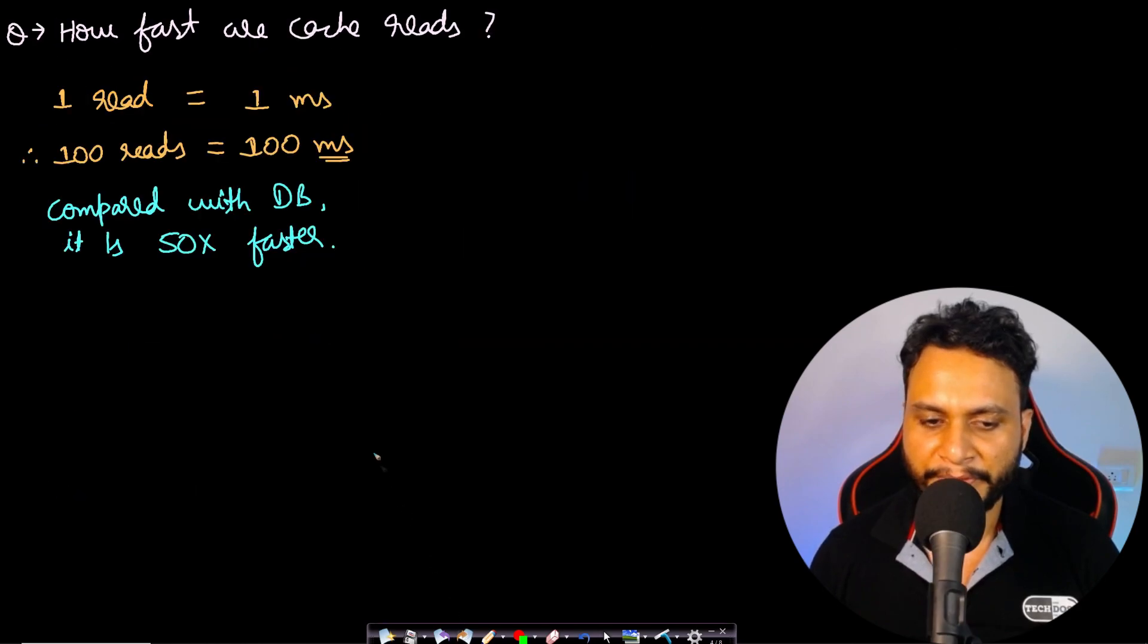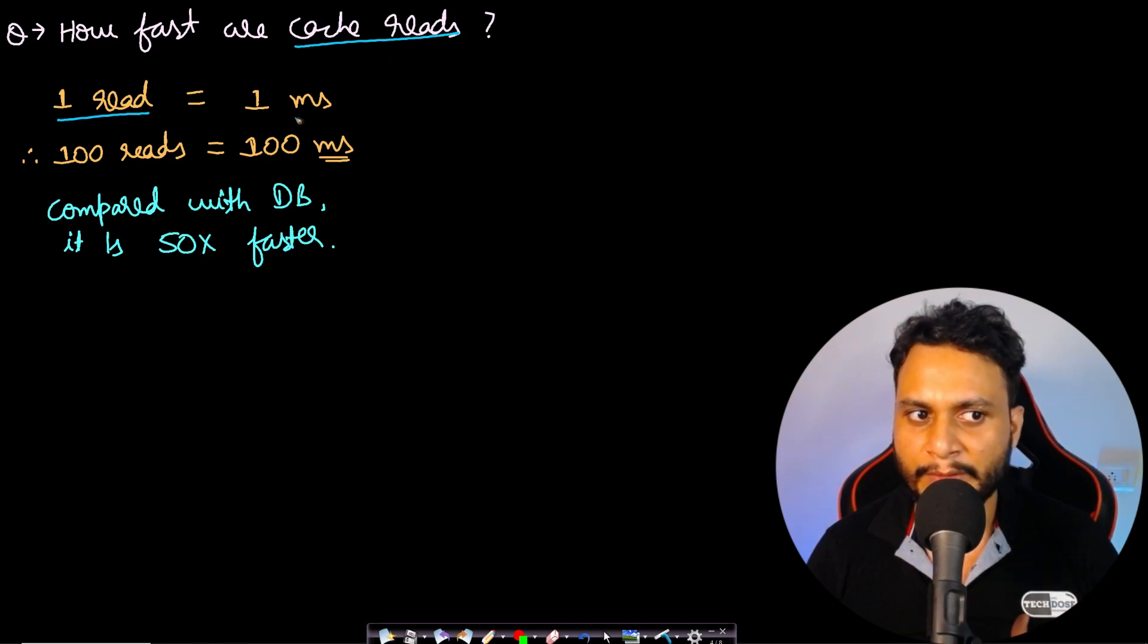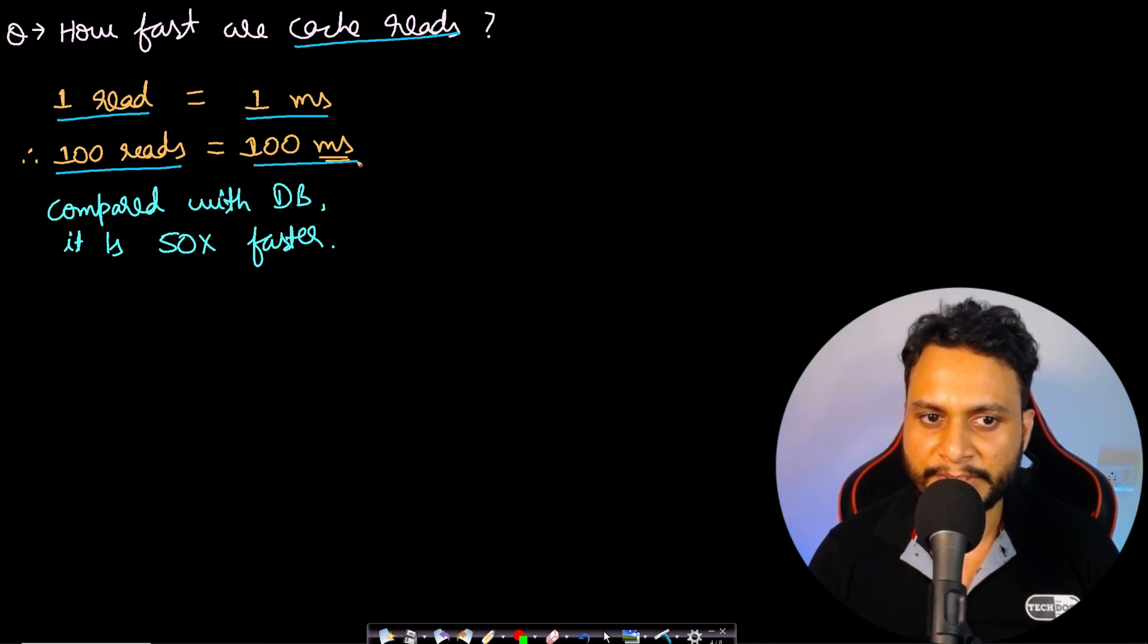Now, since we know about the cache, how fast are the cache reads? You can see that one read is 1 ms, and this is kind of worst case which I am taking. Therefore, for making 100 reads it will be just 100 ms. Compared to the database, this is 50 times faster.